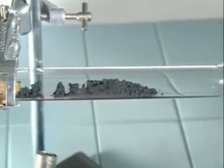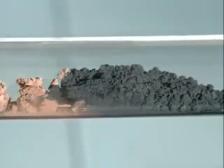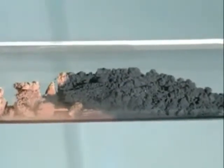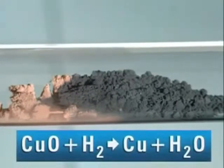Heat the copper oxide in this atmosphere of hydrogen and it quickly changes colour. Hydrogen reacts with oxygen in the copper oxide to form water, and copper metal is left behind. While the copper oxide is reduced, the hydrogen is oxidised.